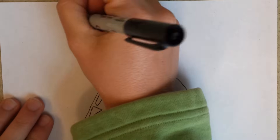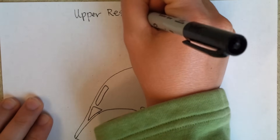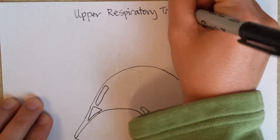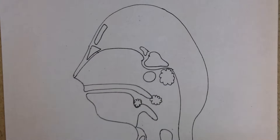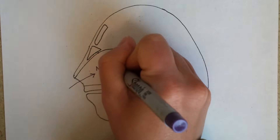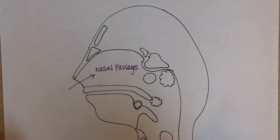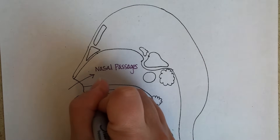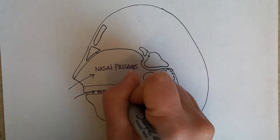Upper respiratory tract. On this page we'll look at the anatomy of a sagittal view of the head. To help you get your bearings, let's look at where air comes in. These are the nasal passages and they are lined with a mucous membrane. And then this is the mouth cavity, or the oral cavity.